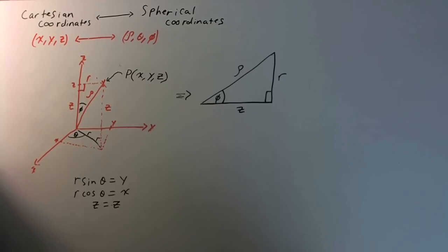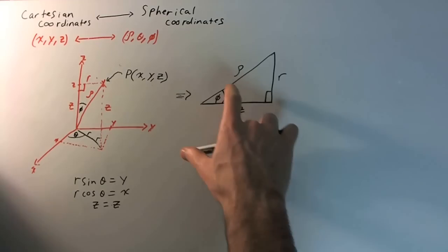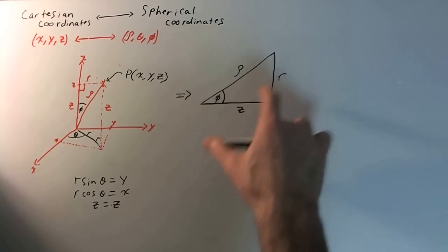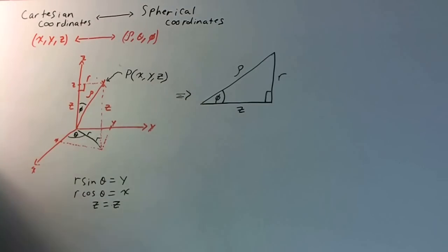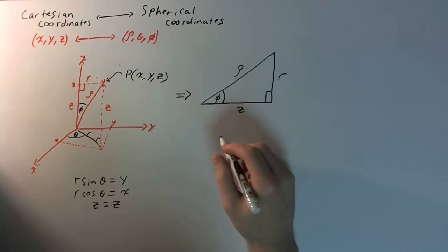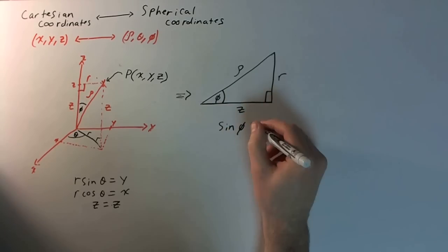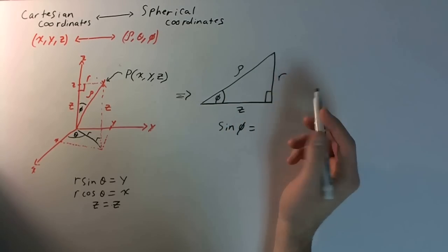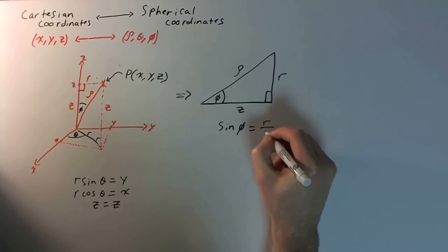So, using trigonometry and our trigonometric functions, we can actually solve this angle as a function of the hypotenuse and the two legs. We know that the sine of phi is going to be equal to, if you remember SOHCAHTOA, opposite over the hypotenuse, r over rho.